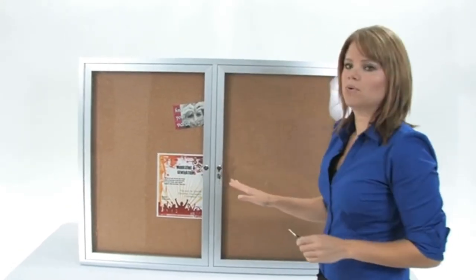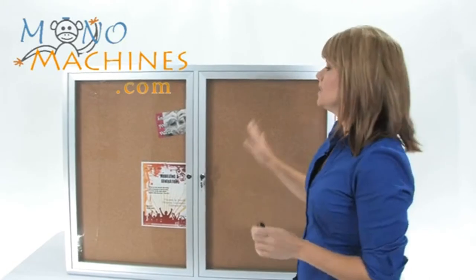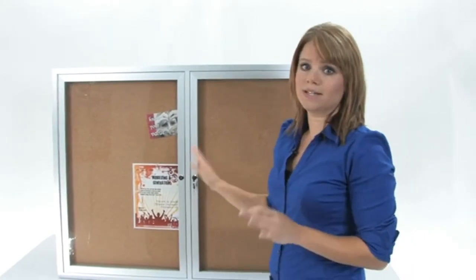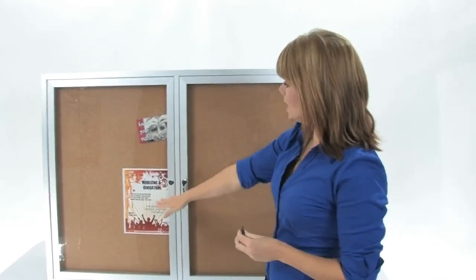Now a great feature about this board is the shatterproof windows, and what you can't see is it's vented and water resistant, which makes it great for outdoor use. This board is simple. It's easy to use. All you have to do is change it, lock it, and walk away.